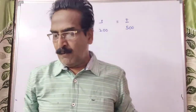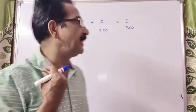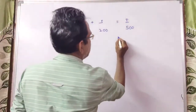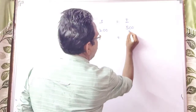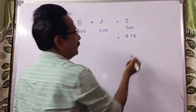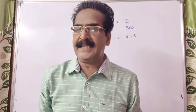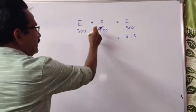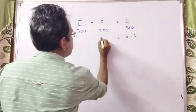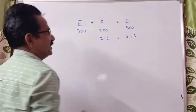Now the income increases by 15%. So 15% of 500 is 75, making the new income 575. And savings increases by 6%. 6% of 200 is 12, so new savings is 212.